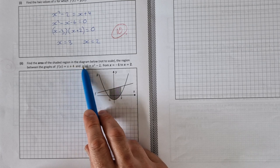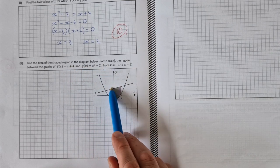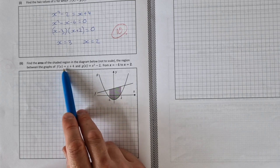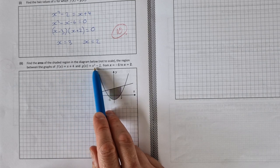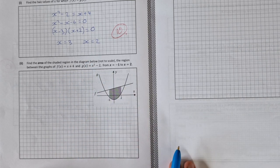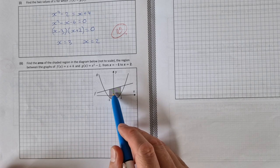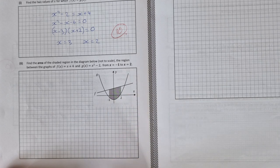Part two of A: find the area of the shaded region in the diagram below. So this is the shaded region between the two functions f(x) = x + 4 and g(x) = x² - 2, the functions from the above part. Find the area between them.